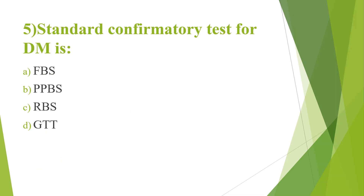Fifth question: Standard confirmatory test for diabetes mellitus. Option A, FBS; Option B, PPBS; Option C, RBS; Option D, GTT. Answer is Option D, GTT — that is glucose tolerance test — which is a standard confirmatory test for diabetes mellitus. HbA1c is a glucose memory test.